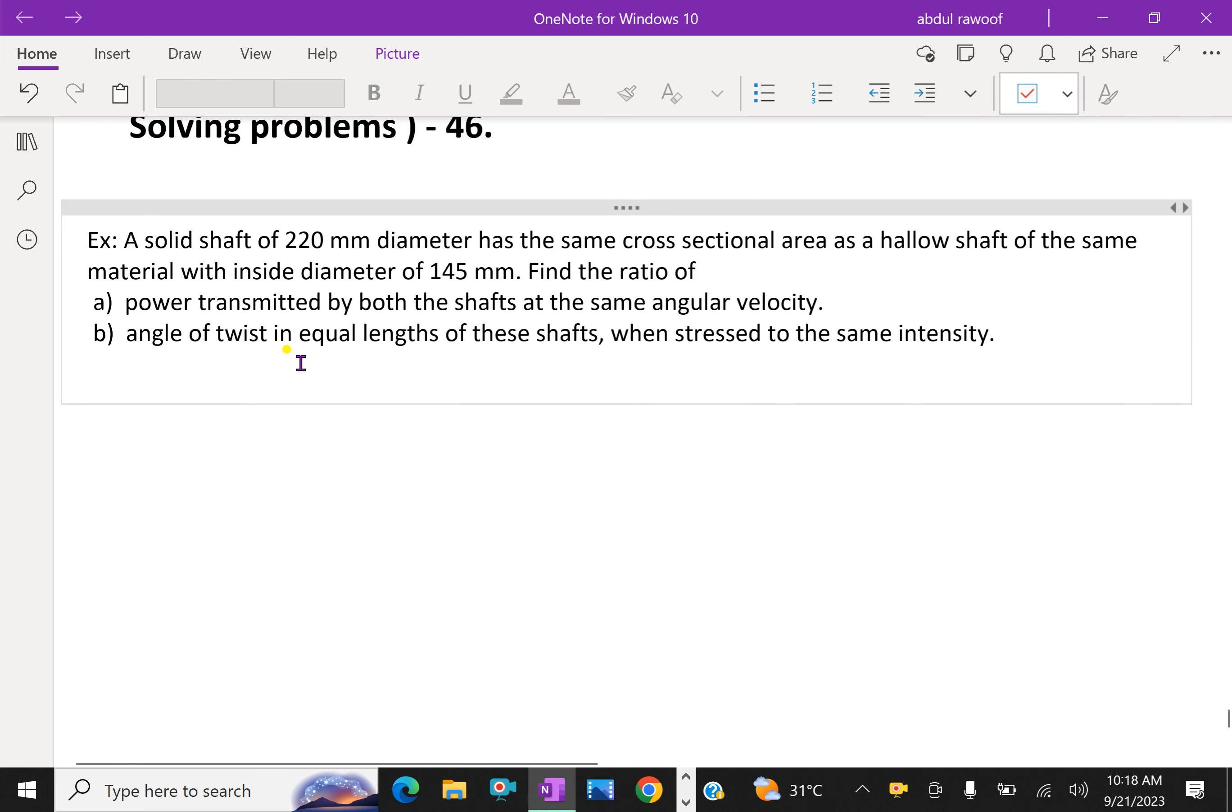Look at this example. A solid shaft of 220 mm diameter has the same cross-sectional area as a hollow shaft of the same material with inside diameter of 145 mm. Find the ratio of power transmitted by both shafts at the same angular velocity. Second, angle of twist in equal length of these shafts when stressed to the same intensity.